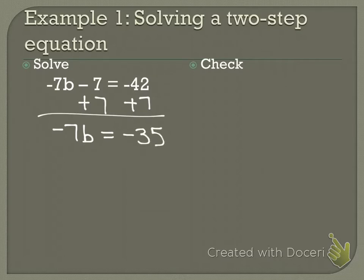Negative 7b equals negative 35. Now how do I solve for b? Divide by negative 7. If it's negative, I have to take it with me to the other side. Dividing two negatives, so is my answer positive or negative? It is positive. B equals 5.